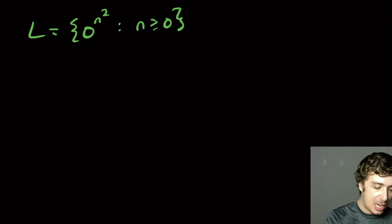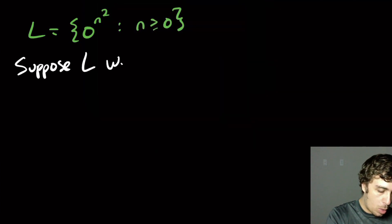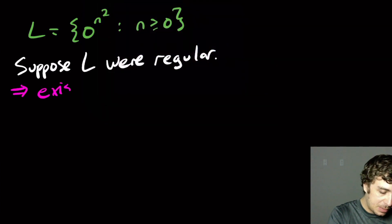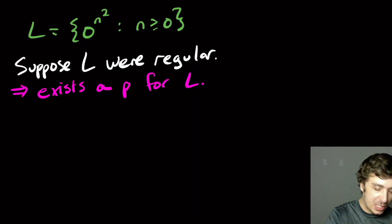And we claim that this is not regular. So let's proceed as we would normally do. Suppose L were regular. Then what we know is that there exists a pumping constant p for this language L.